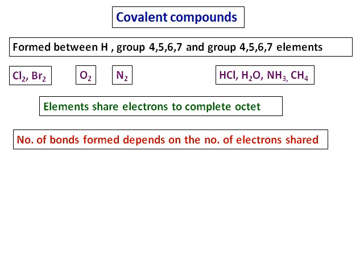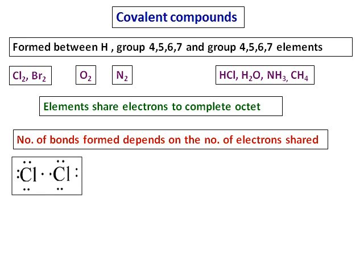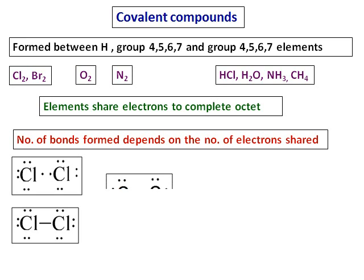The number of bonds formed between elements depends on the number of electrons they share. For example, consider Cl and Cl — they share one electron each, meaning there are two electrons between the two chlorine atoms, and hence a single bond is formed.